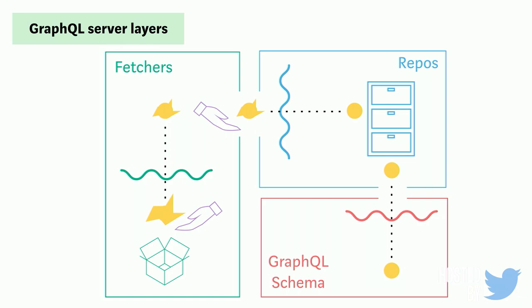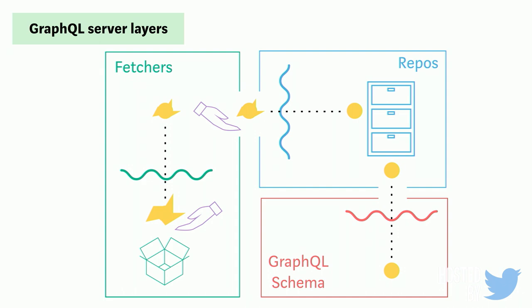We've done this with what we call a layer cake of responsibility: fetchers, repositories, and our schema. When we hit an endpoint and get a bunch of data back, it's not quite the shape we need. So we take it through these different layers — shaping the data in our fetchers, then through our repos for more shaping, and eventually through our GraphQL schema until it's actually what the client wants. GraphQL is all about making sure the client is getting the data they actually need, not just what happened to be sent back.